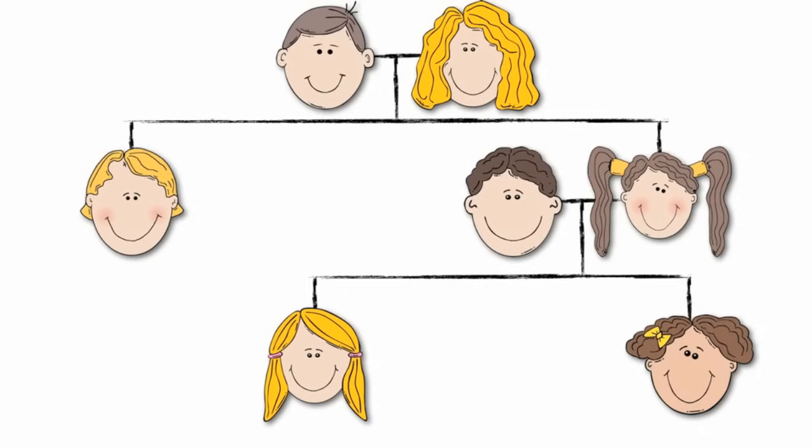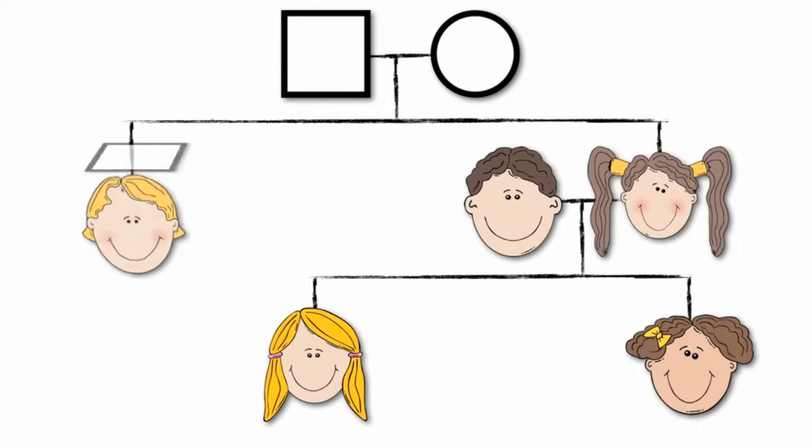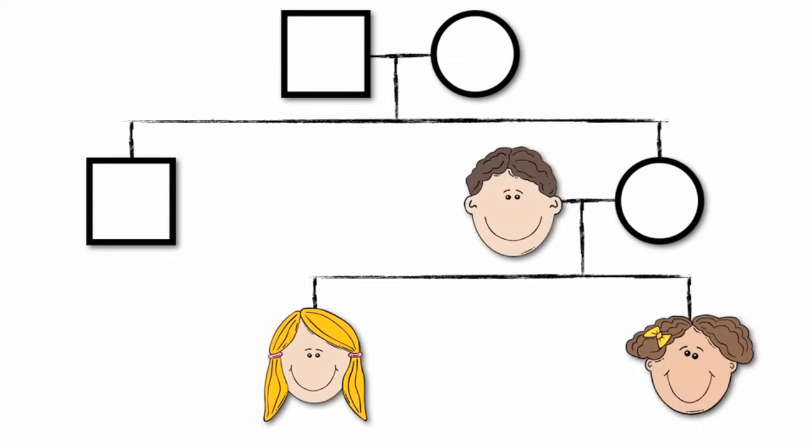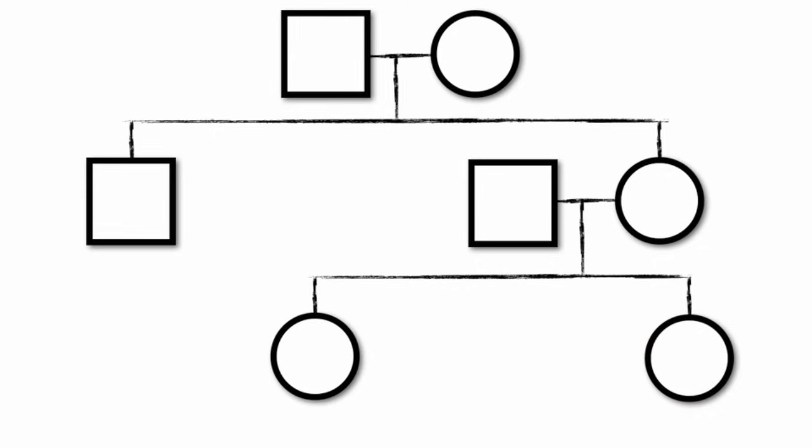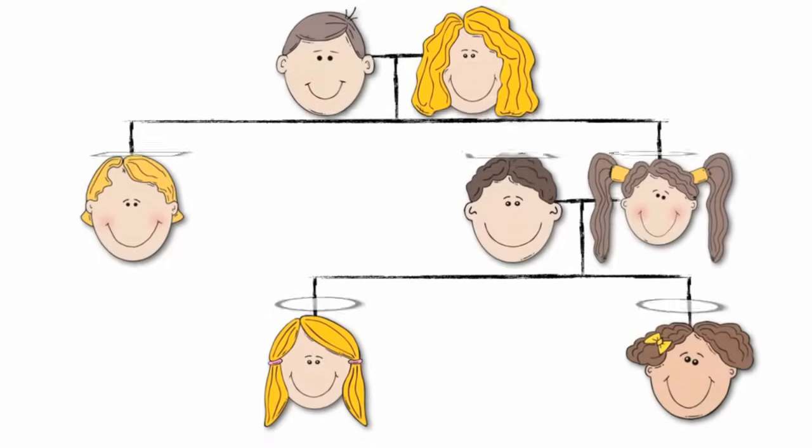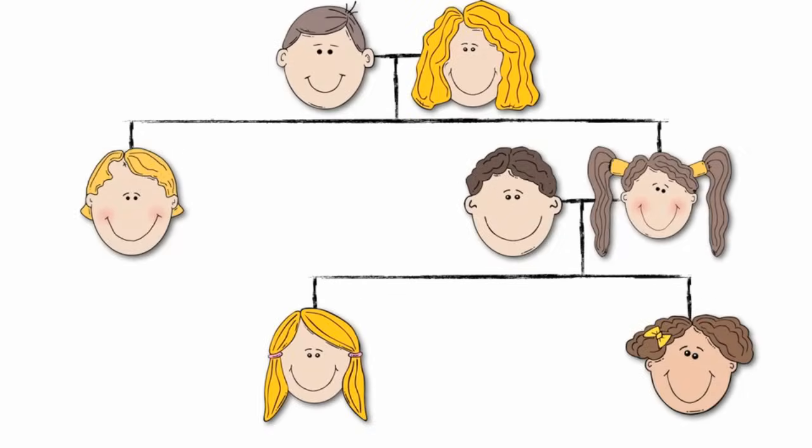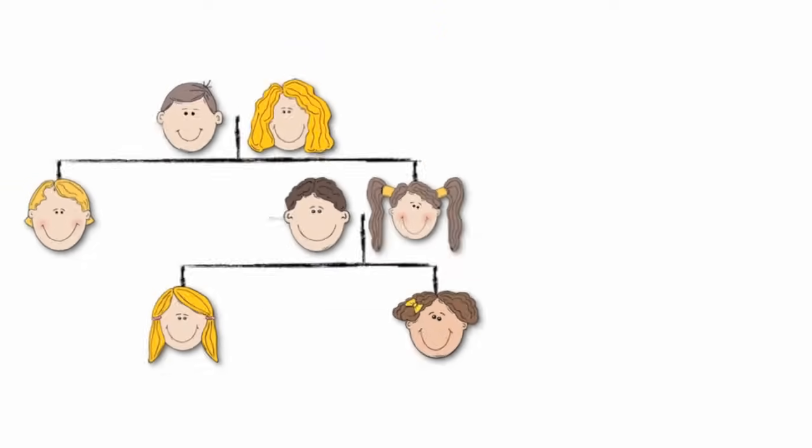Scientists look at this family tree and simplify it. Instead of using faces and names, scientists use symbols. Squares represent males and circles represent females. This is an example of a pedigree chart. Scientists will then use this information to track the passing on of traits. In our family tree we'll look at the passing on of the blonde-haired trait.